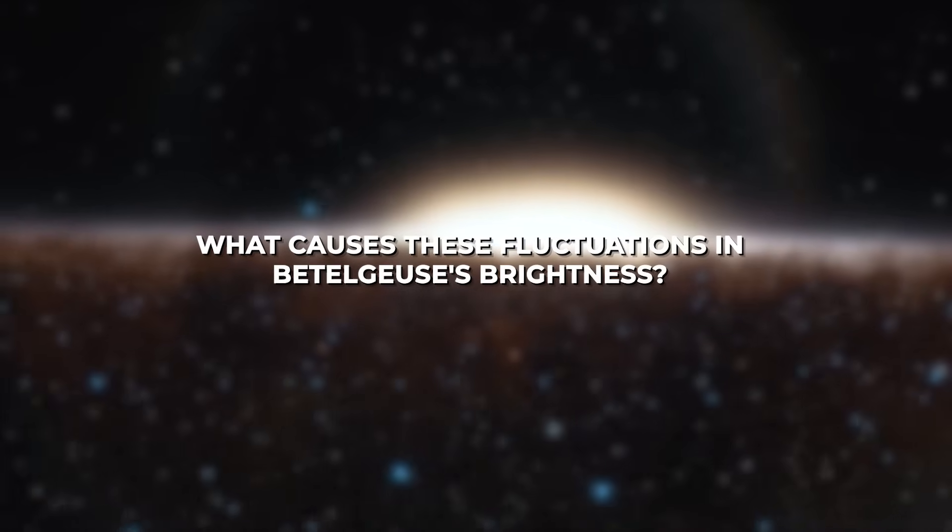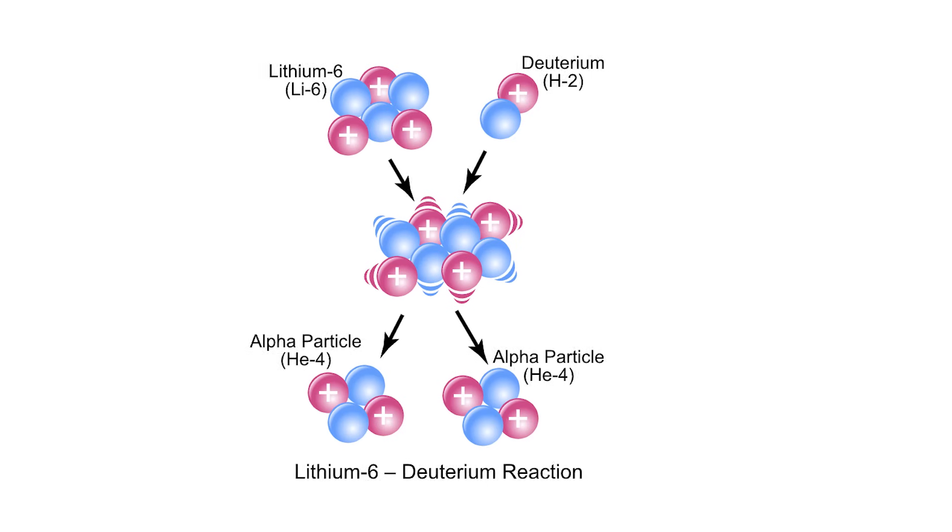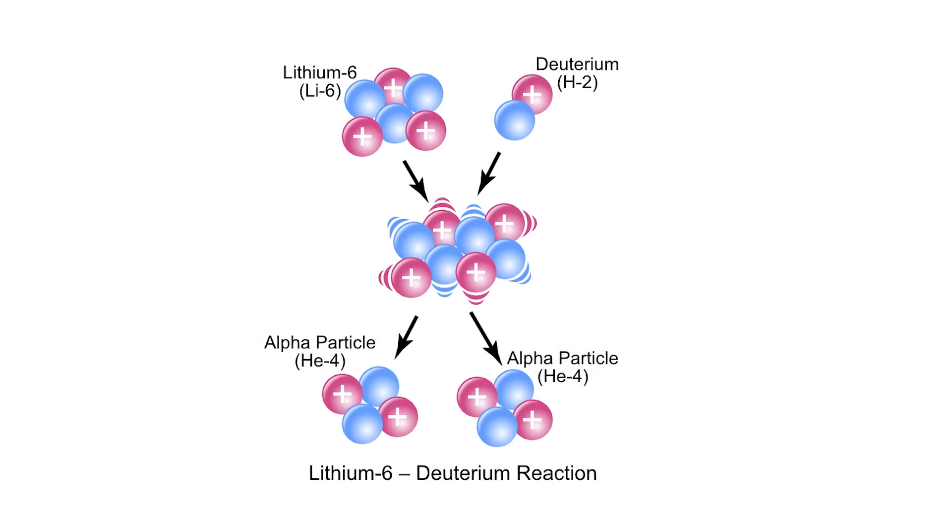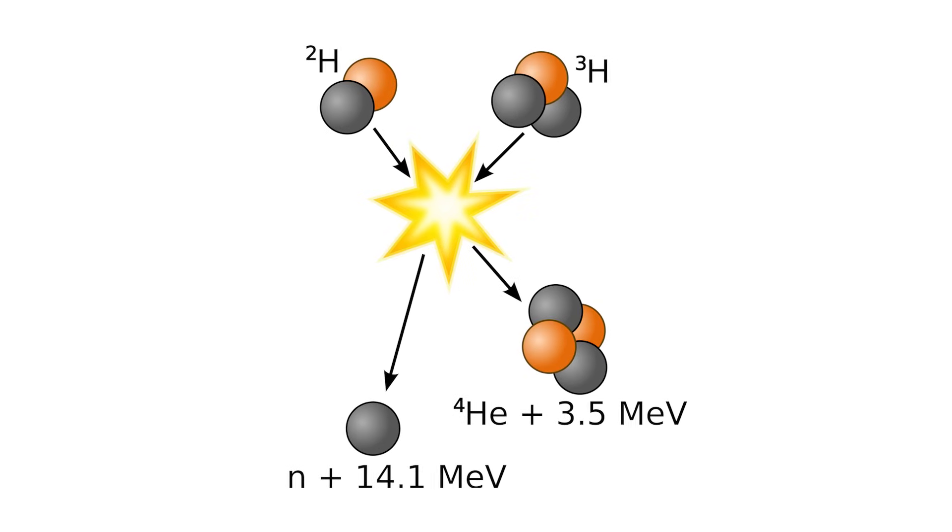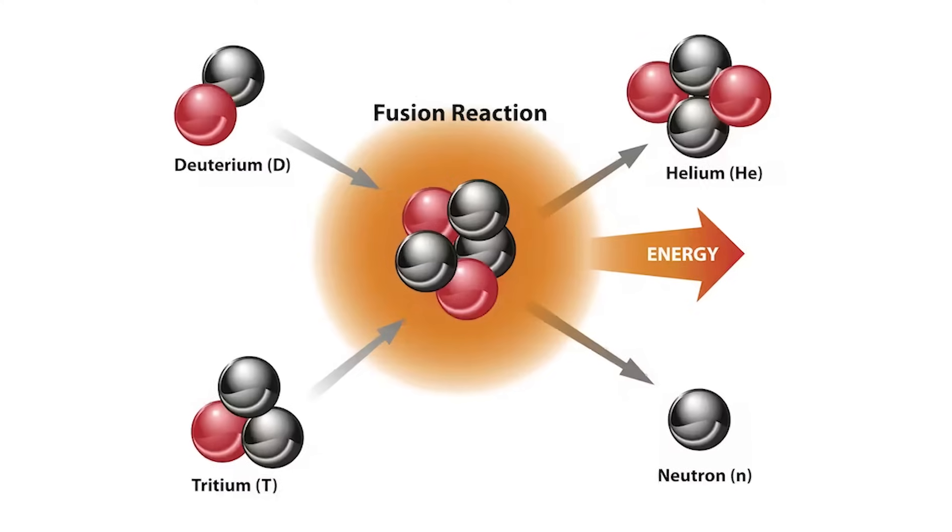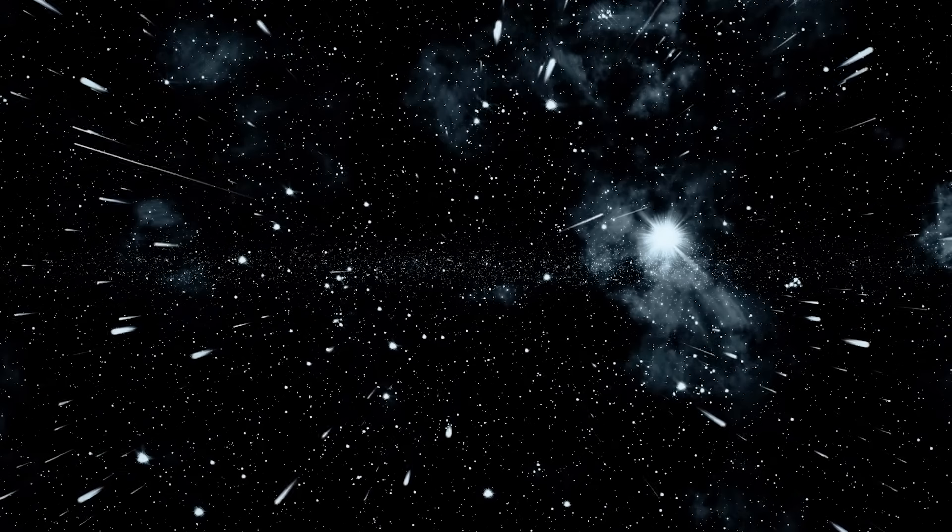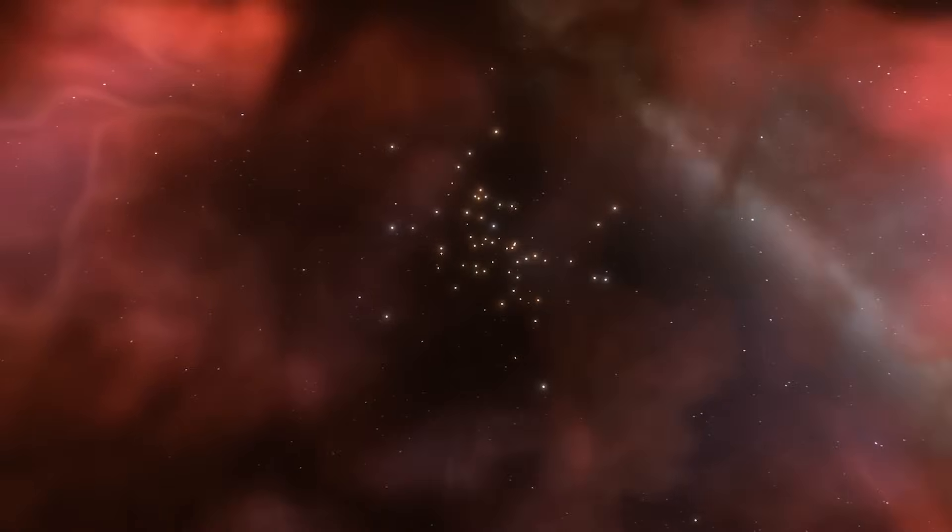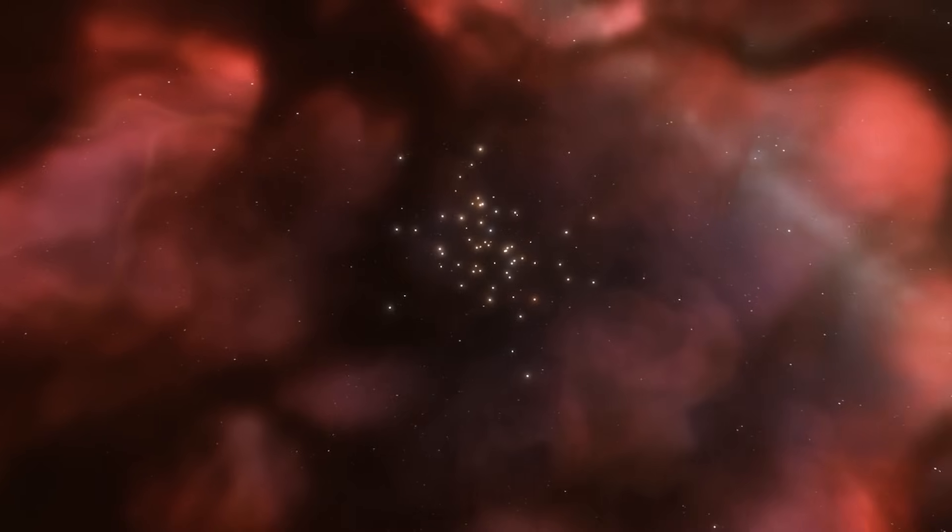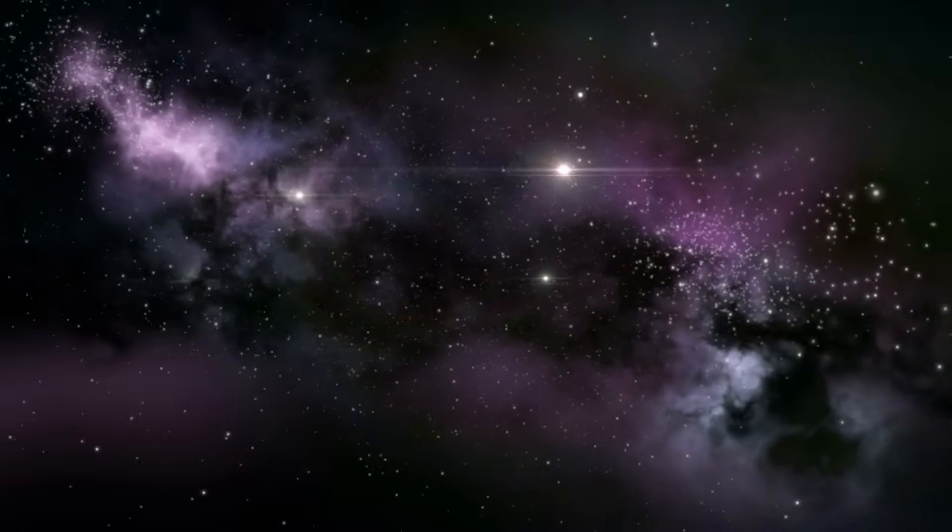So what causes these fluctuations in Betelgeuse's brightness? Well, deep within its core, there are intense nuclear reactions happening, like a bubbling cauldron. Hydrogen atoms fuse together to form helium, releasing a tremendous amount of energy in the process. This energy pushes the outer layers of the star outward, causing them to expand. As the outer layers of the star expand, they begin to cool down. This cooling effect causes the nuclear fusion rate to decrease. As a result, the star's brightness decreases, and the outer layers start to contract again. This cycle of expansion, cooling, and contraction continues in a repeating pattern, giving rise to the changes in brightness that we observe.